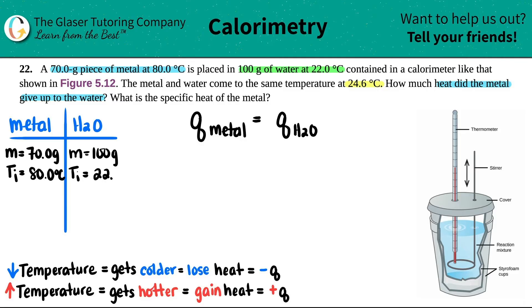Now they did tell us a final temp. Anytime that these two things come into equilibrium, they will always have the same temperature. So in this case, the same temperature is 24.6 degrees Celsius. So that's going to be the final temperature for both of them. So the Tf for the metal is going to be 24.6 degrees Celsius, and then the Tf for the water is also going to be 24.6 degrees Celsius. Now which one gained heat and which one lost heat?